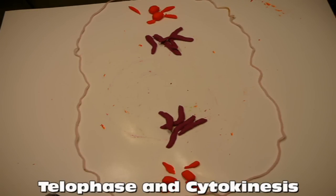In telophase, the elongation of the cell continues. Daughter nuclei begin to appear as the nuclear envelopes form and the chromosomes uncoil because the mitotic spindle has disappeared.